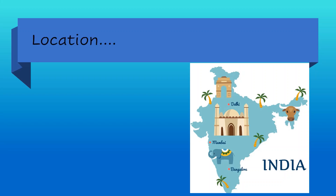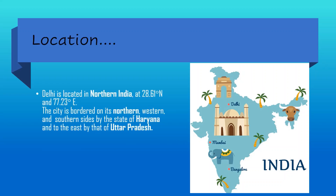Now let us talk about the location of Delhi. Delhi is located in Northern India at 28.61 degrees north and 77.23 degrees east. The city is bordered on its northern, western, and southern sides by the state of Haryana, and to the east by Uttar Pradesh.